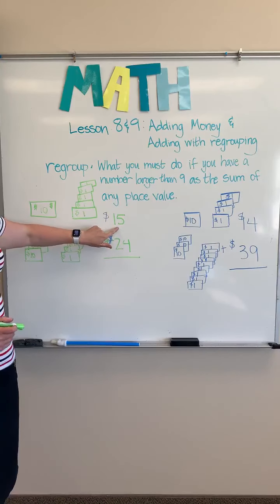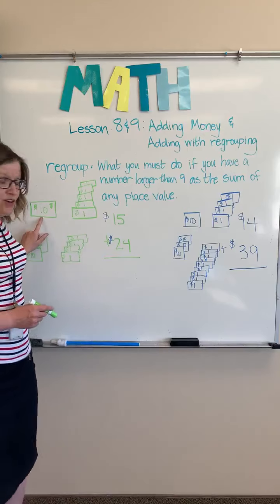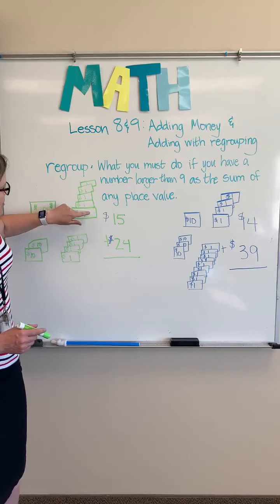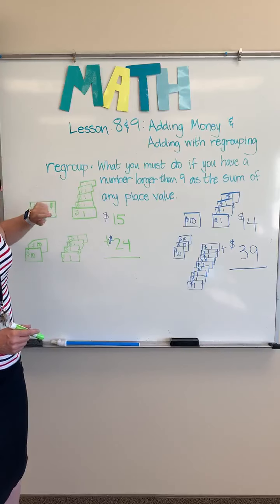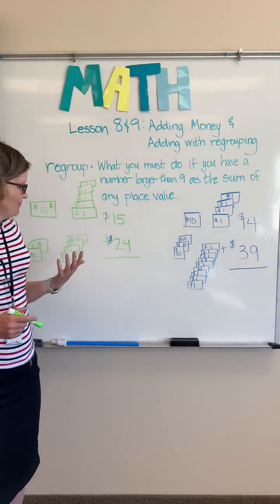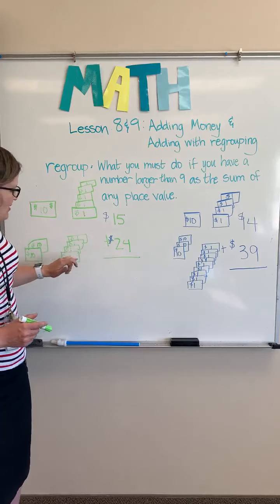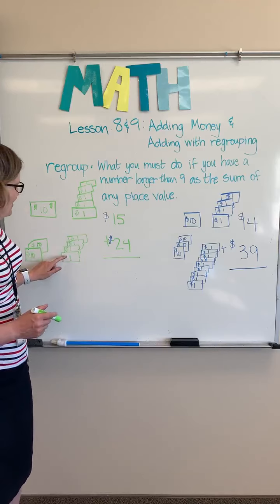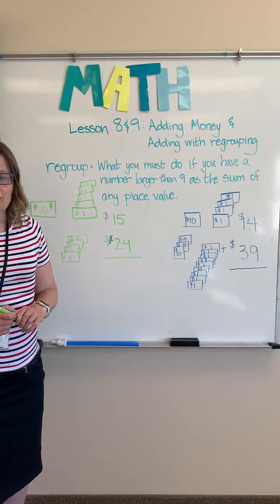So $15 we know as a $10 bill, and then one, two, three, four, five — $1 bills. And then here we have $24, and I have two $10 bills and then one, two, three, four — $1 bills.